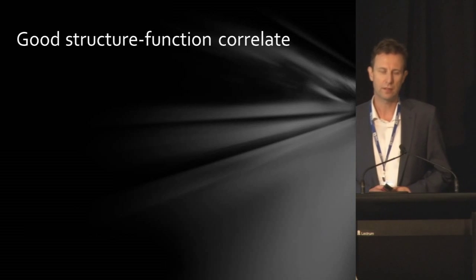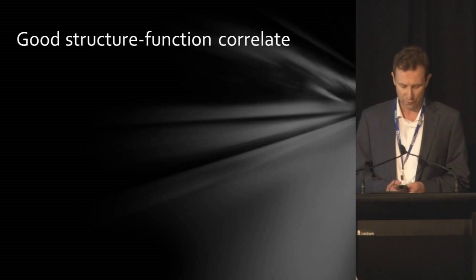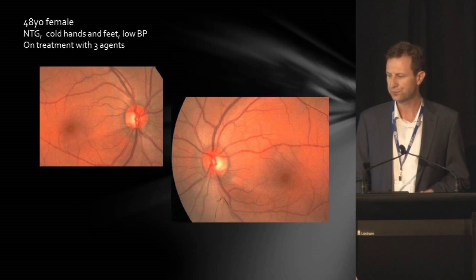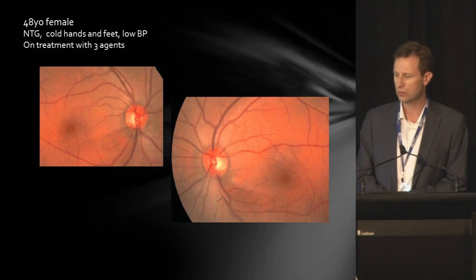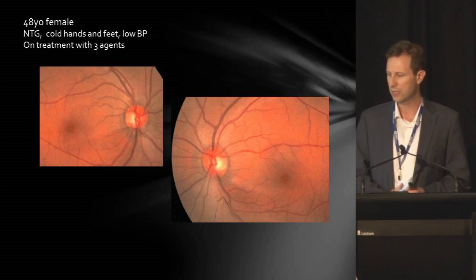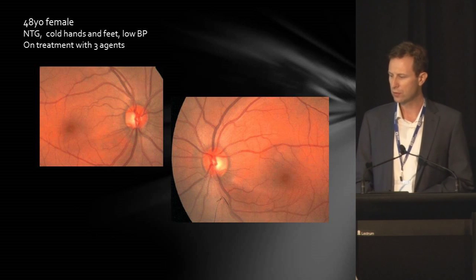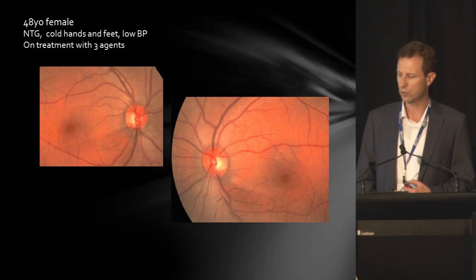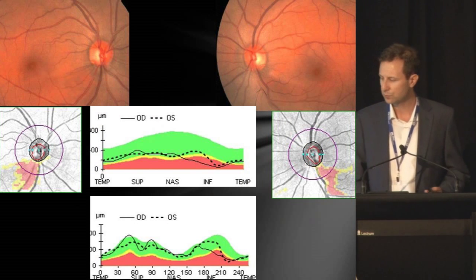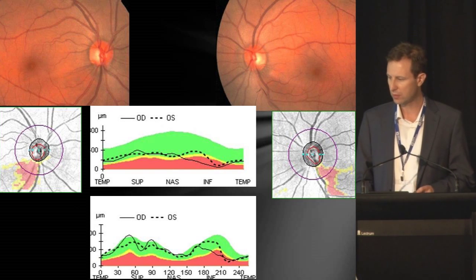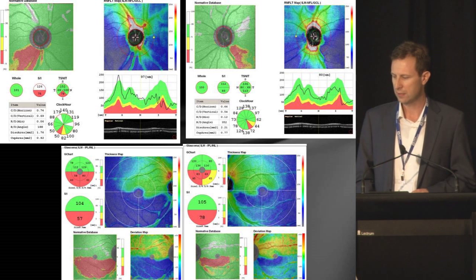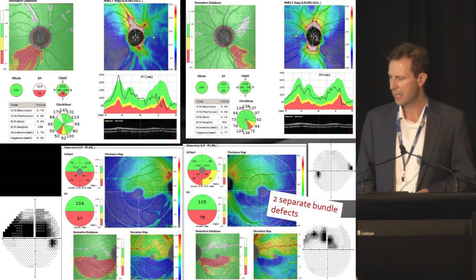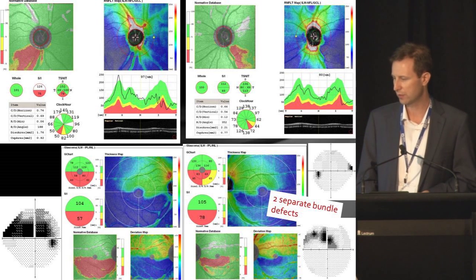This brings me to the next point about the usefulness of ganglion cell imaging: there's often a good structure-function correlate when field defects develop a little bit later on. This patient is a 48-year-old female with normal tension glaucoma, with classic risk factors - cold hands and feet, low blood pressure - and she's on treatment with three agents. You can see the nerve fibre dropout on the photo inferiorly in both eyes, confirmed on the OCT with inferior nerve fibre layer thinning in both eyes. But when we do the ganglion cell, we can see areas on the right and the left which correspond very well to her visual field defects. In the left, there are two separate bundle defects with a paracentral arcuate scotoma that doesn't actually show up on the 24 degrees but shows up on the 10-2.